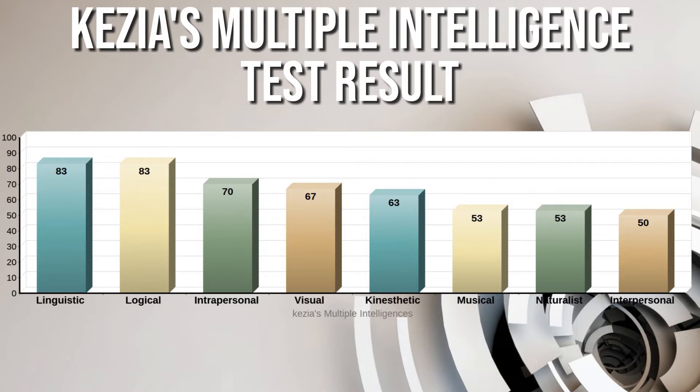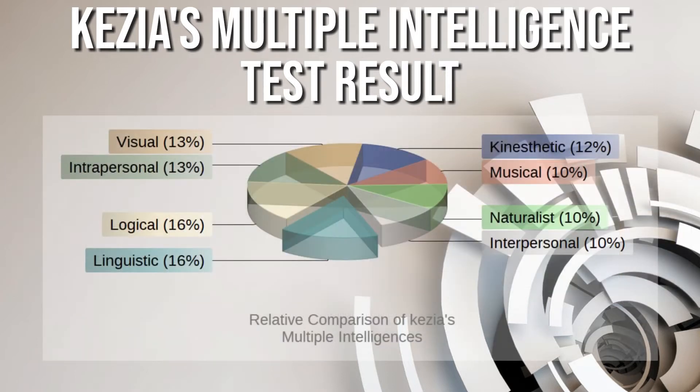This is my multiple intelligence test result. According to this chart, my most dominant is mathematical-logical and linguistic. It's probably true because I enjoy solving puzzles with logic and calculation, and I prefer logic-based or calculation-based school subjects. I also join a lot of competitions and present in front of many people. My least dominant intelligence is interpersonal intelligence, because I prefer being alone and having me-time compared to being in a crowded place.